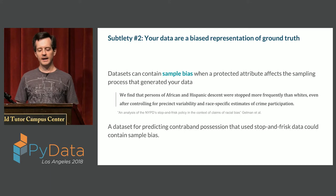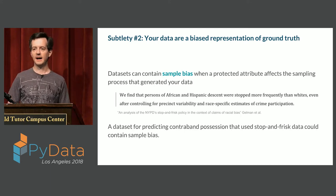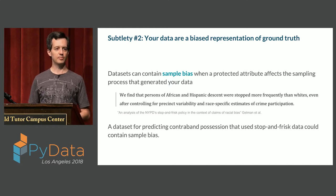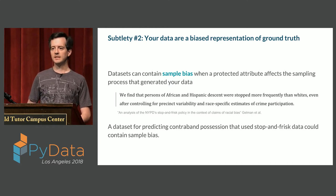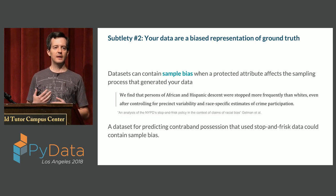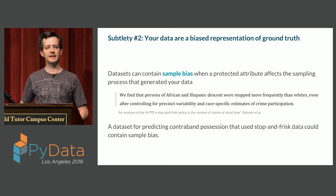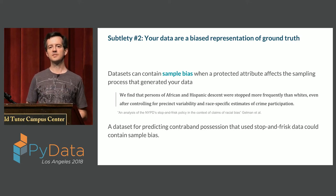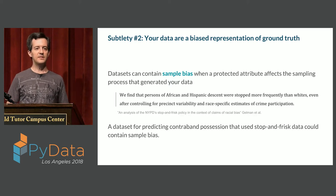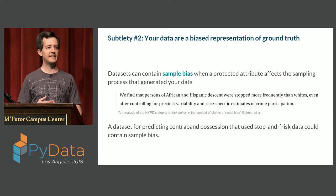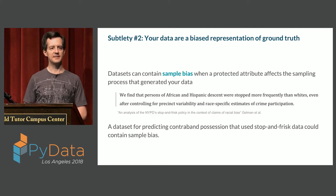Even if the labels are good, you might get bias through what's called sample bias. With sample bias, you are preferentially including or excluding individuals in your sample based on their protected class. A concrete example would be stop-and-frisk policies, where police officers can stop individuals on the street and check them for illegal firearms or drugs. There's evidence that police officers have different thresholds of suspicion for stopping persons of different races. Even if police officers are equally likely to find contraband on everyone, just the fact that the process of including them in the data set at all is biased can introduce that bias into your model's training set.